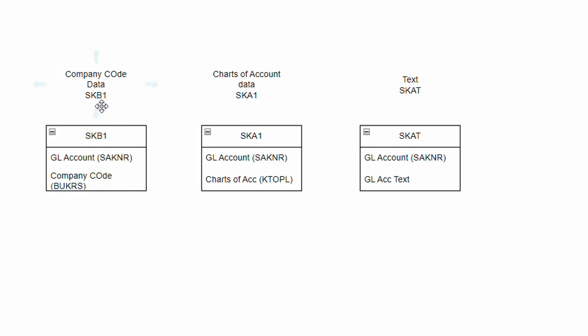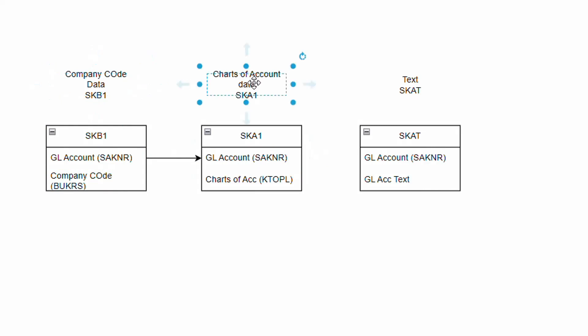To map SKB1 with SKA1, the common field is the GL account - SAKNR maps to SAKNR in SKA1. However, the same GL account number can exist in two different company codes or charts of accounts that are unrelated. So we need another field to confirm that the GL account in a company code corresponds to the correct charts of account, meaning we need to link company code with charts of account data.